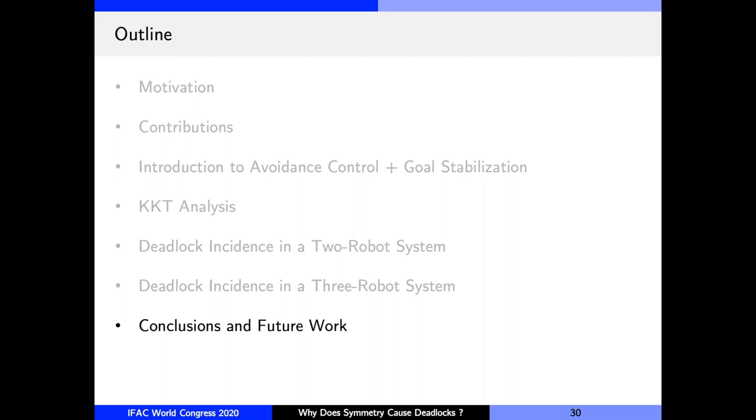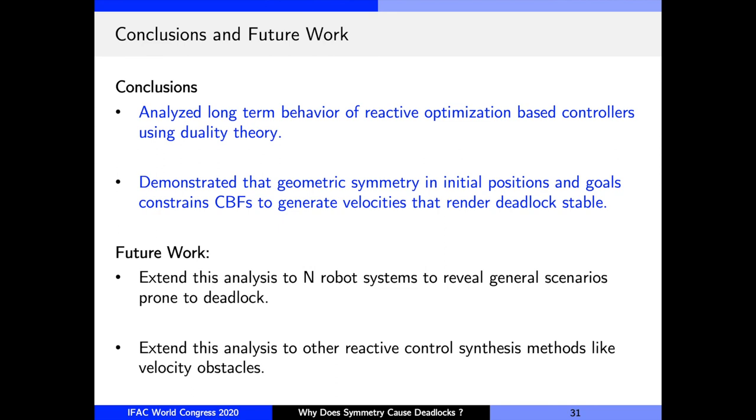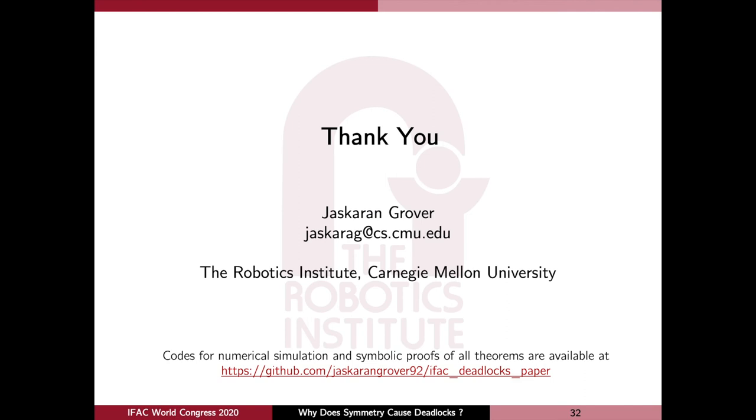All right, so let's see the summary of our work now. So in this paper, we analyzed long-term behavior of reactive optimization-based controllers using duality theory, and we demonstrated that it is the geometric symmetry in initial positions and goals that constrain CBFs to generate velocities that render deadlock stable. In future, we plan to extend this analysis to n robot systems and consider symmetric and asymmetric configurations to reveal general scenarios that are prone to deadlock. We also plan to extend this analysis to other reactive control synthesis methods like velocity obstacles. And with that, I'd like to thank you for listening to my presentation. Please reach out to me for any questions, and the codes for the simulations and proofs are available on this link. Thank you.